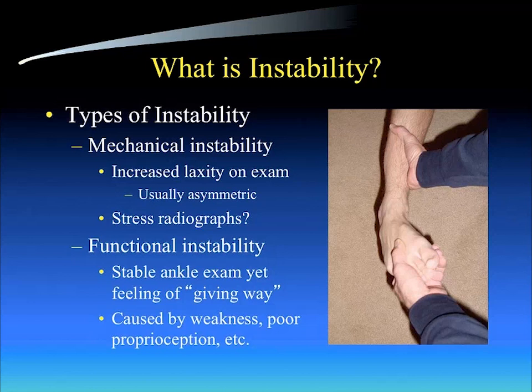There's also functional instability. Functional instability is where you may examine the patient and find that they're relatively stable and without asymmetry, and yet they present with a subjective feeling of giving way — repetitive inversion incidents that interfere with not only recreational activity but activities of daily living. Functional instability can be caused by weakness or poor proprioception, poor recovery after a prior inversion ankle sprain.